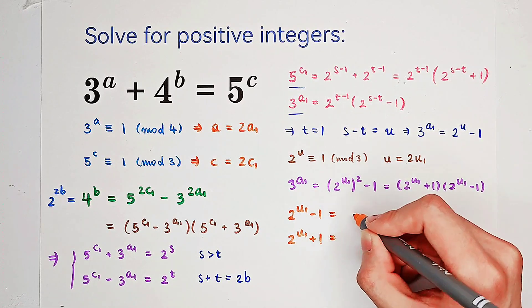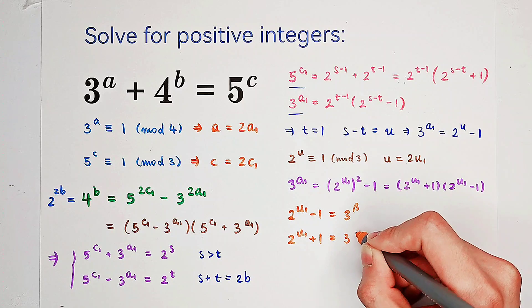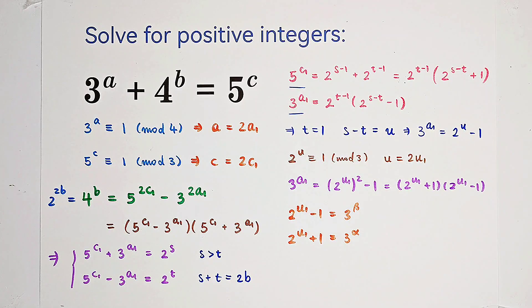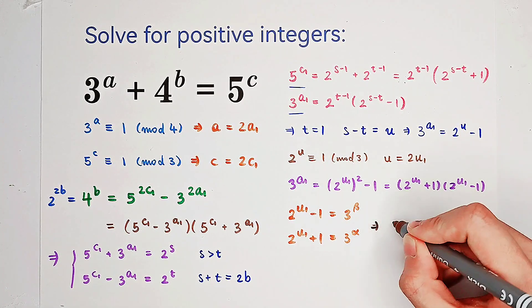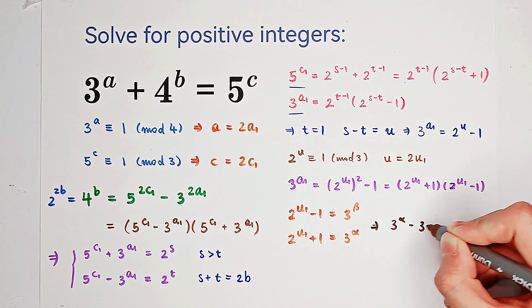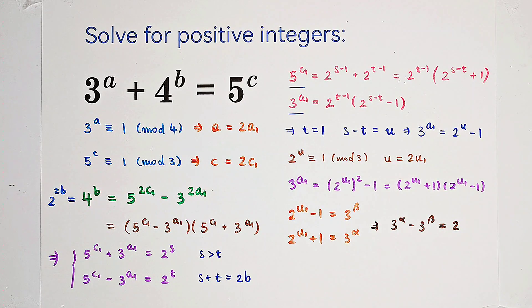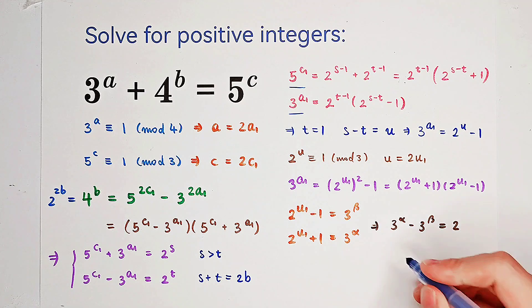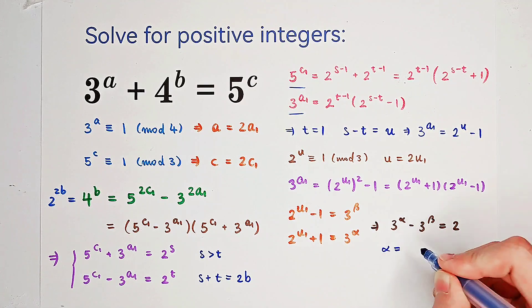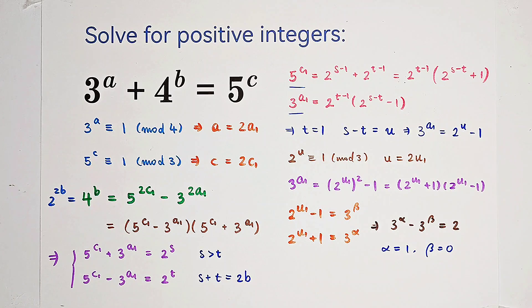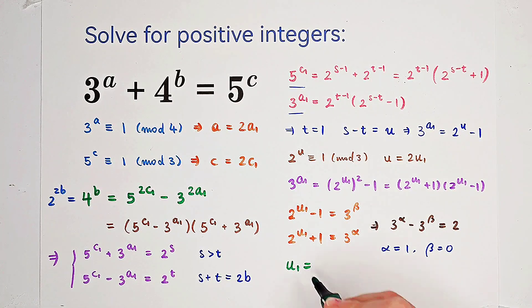By the same argument, both 2 to the power of u1 minus 1 and 2 to the power of u1 plus 1 must be powers of 3 — say 3 to the power of beta and 3 to the power of alpha respectively. From this we get 3 to the power of alpha minus 3 to the power of beta equals 2. However, two powers of 3 cannot differ by exactly 2 unless alpha equals 1 and beta equals 0, giving u1 equals 1.